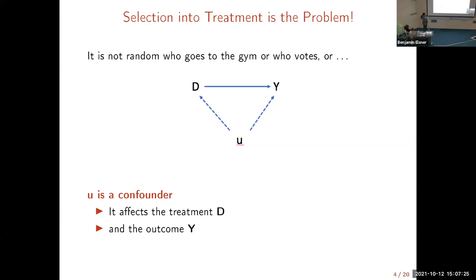We have so-called confounders — variables that determine both what we call the treatment and the outcome. For example, a student's ability or their parental background may determine their wages and also their education. If I run a regression with wages on the left and education on the right, I can't be sure whether my result reflects more education or simply parents who gave them a better start in life. This is a classic selection into treatment problem, also called the endogeneity problem. In the sciences, you run an experiment, randomize the treatment, and it's independent of the confounder.